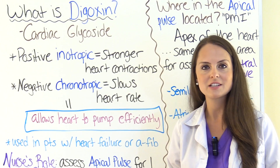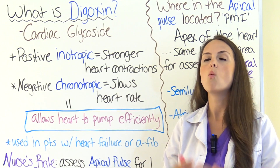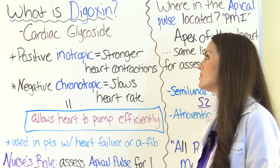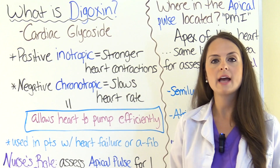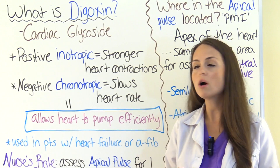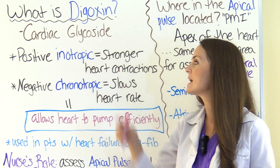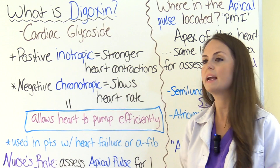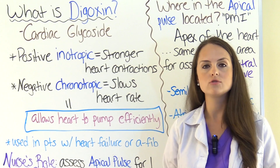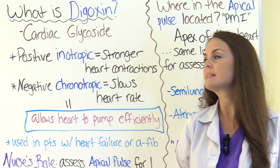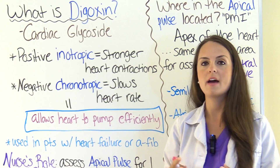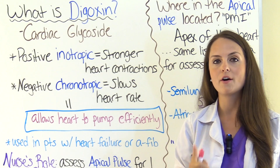The first thing that should be popping in your head is: what is Digoxin? Well, Digoxin is a cardiac medication and it acts on the heart. It's part of the cardiac glycoside family. And Digoxin is really an interesting drug because it has a positive inotropic effect on the heart.